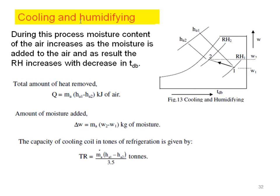The sixth process is cooling with humidification. During this process, moisture content of the air increases as moisture is added, so relative humidity increases while dry bulb temperature decreases. On the psychrometric chart, the process goes from state point one to two — specific humidity ω₁ increases to ω₂ along with a cooling effect.